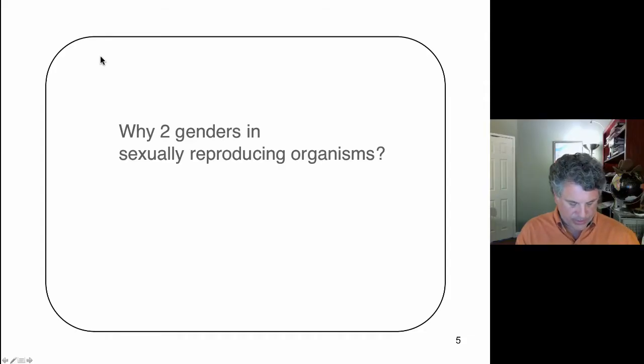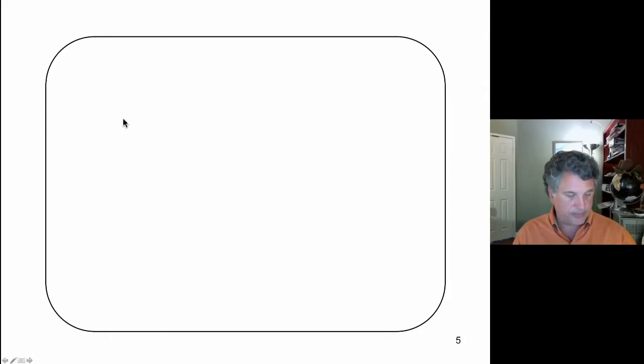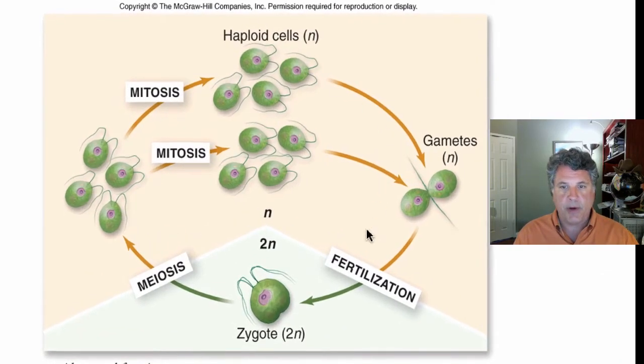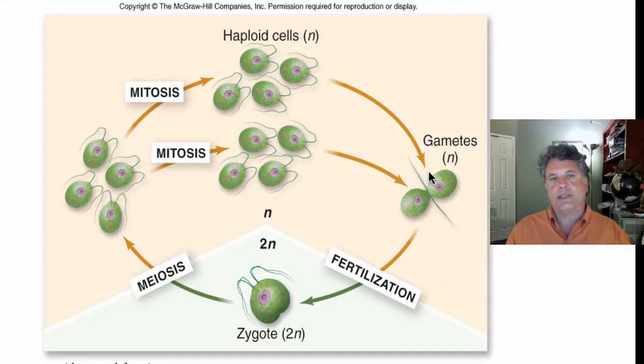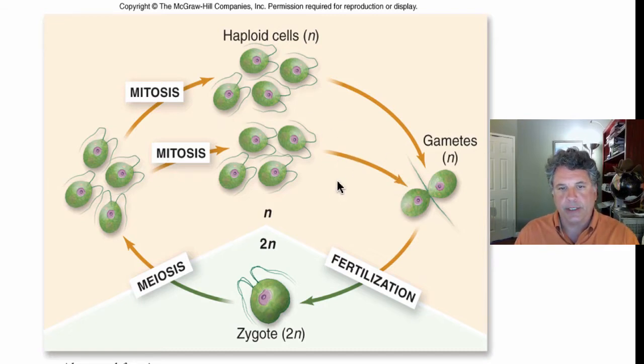Why are there two genders? Let's consider our Chlamydomonas population again. Let's go back to single-celled organisms, back to the mists of time when there were no multicellular organisms. We will say that sexual reproduction has gotten started as a way to avoid parasitism.